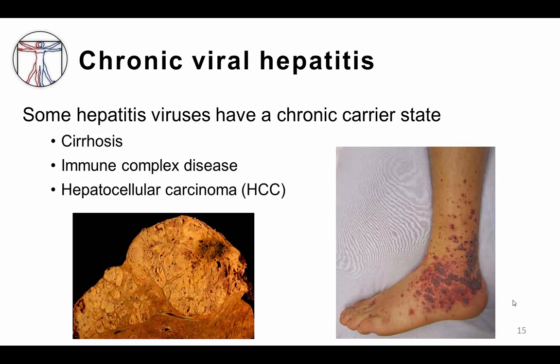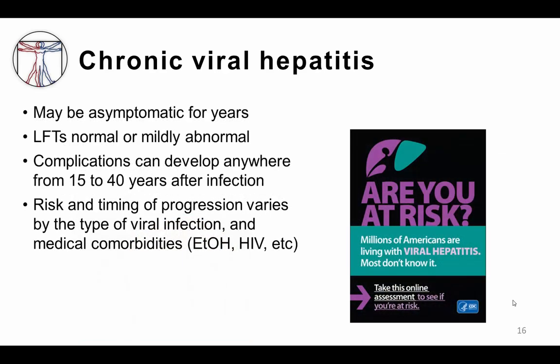The long-term sequelae of chronic viral hepatitis infection may include cirrhosis, which is permanent damage to the liver, immune complex disease, and also hepatocellular carcinoma, which is a type of liver cancer. Chronic viral hepatitis is most often totally asymptomatic in its earlier stages, and it can take decades for symptoms to appear. Lab tests may show normal or near-normal liver function tests. The risks of progressing to cirrhosis, hepatocellular carcinoma, or other complications is related to a number of different factors, including the type of viral hepatitis and the individual patient's medical comorbidities.